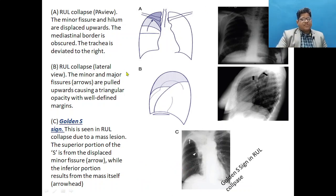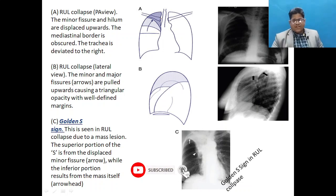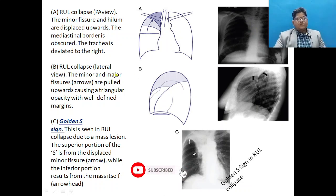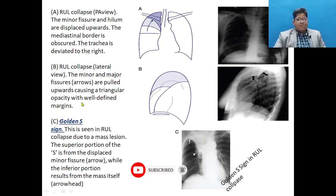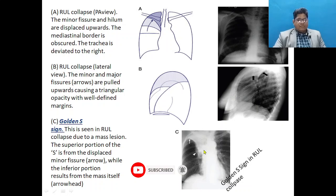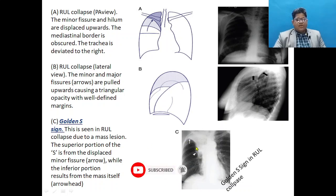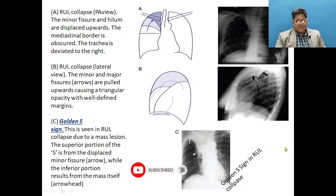In right upper lobe collapse the minor fissure moves upward, the mediastinal border is obscured, and the trachea is deviated toward the collapsed side. In the lateral film, both minor and major fissures are pulled upward giving a triangular shadow. The Golden S sign — an S-shaped fissure deformity — is seen when a mass causes right upper lobe collapse; the upper curve is formed by the minor fissure and the lower by the mass itself, and should prompt evaluation for lung cancer.